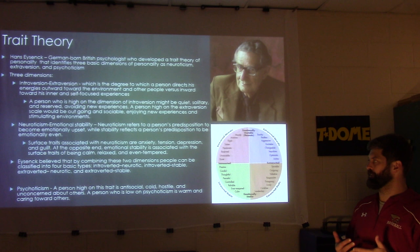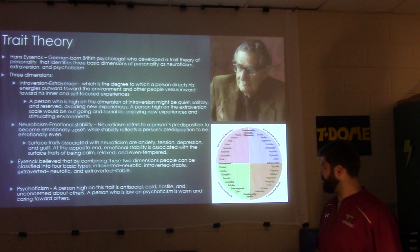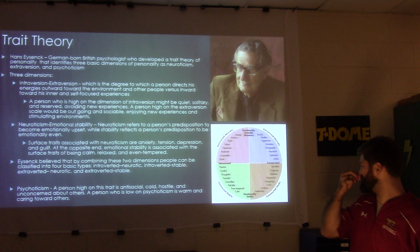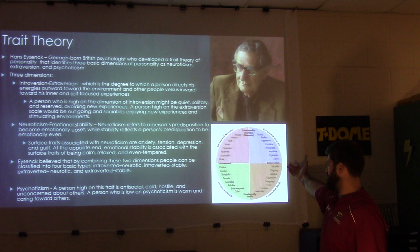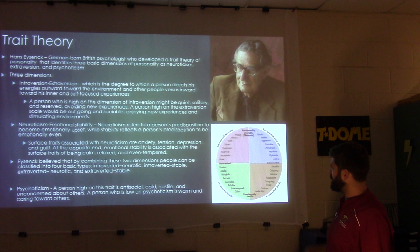Eysenck believed that by combining these two dimensions, people can be classified into four basic types: introverted neurotic, introverted stable, extroverted neurotic, and extroverted stable. For example, between extroverted and emotionally stable you find traits like sociable, outgoing, talkative, easygoing, lively, carefree, and leadership. Between introverted and neurotic you find moody, anxious, rigid, sober, pessimistic, reserved, unsociable, and quiet.